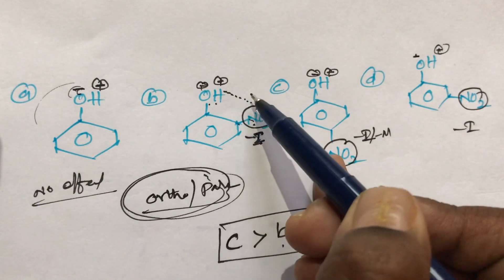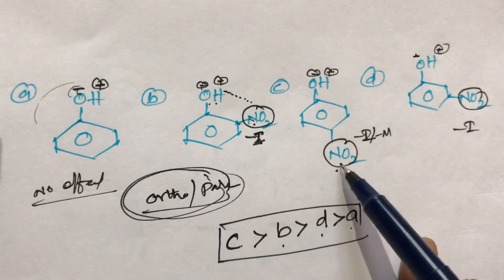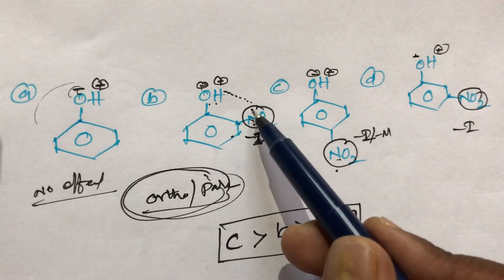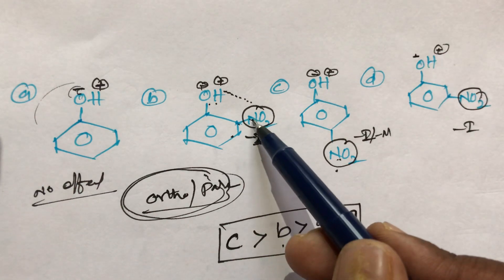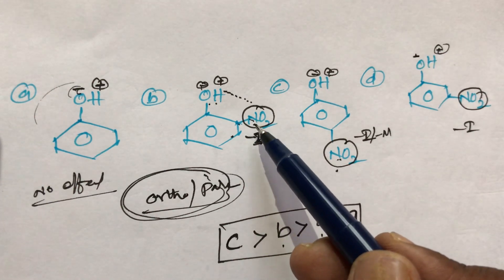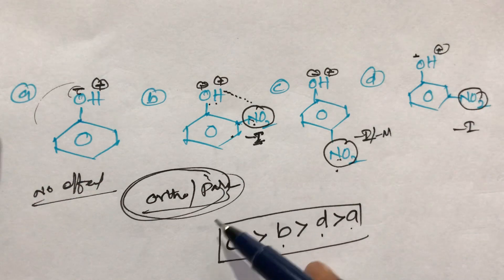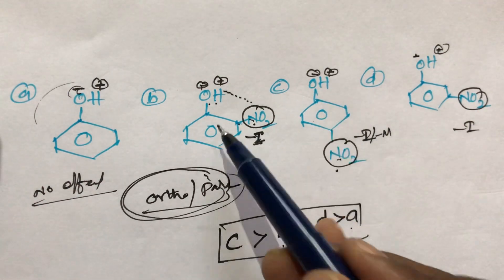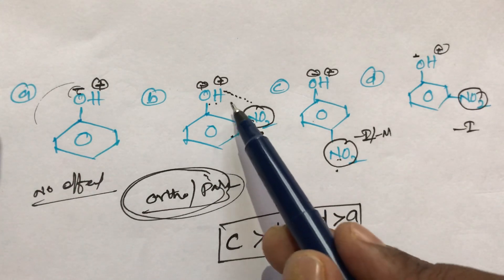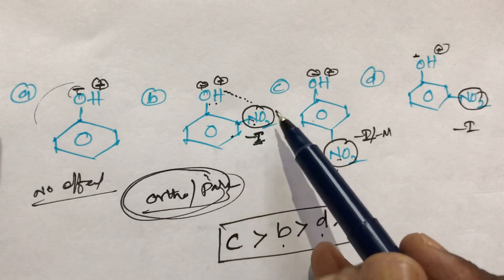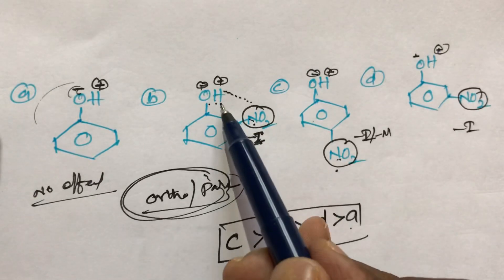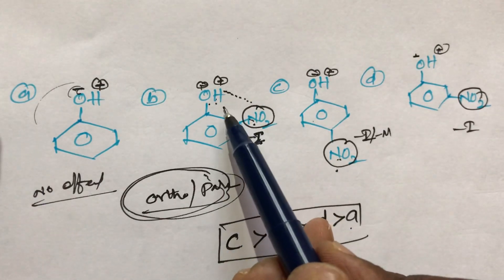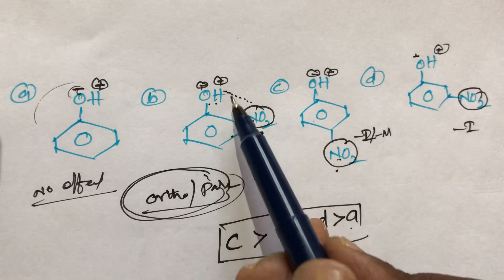Because of intramolecular hydrogen bonding in ortho-nitrophenol, it is very difficult to remove H⁺. That is why compound c (para-nitrophenol) is more acidic than compound b. Due to the presence of intramolecular hydrogen bonding in compound b, H⁺ cannot move easily — that is the key reason.